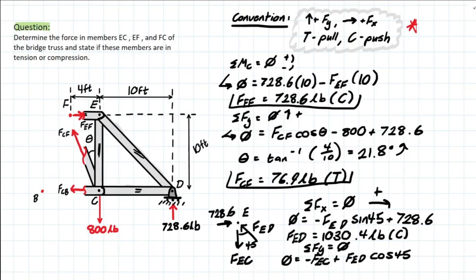But it doesn't matter, sine or cosine, the 45, it will be the same. And then solving for that FEC will equal 728.6 pounds in tension, which will be the last force you need to solve for, and your three final answers.